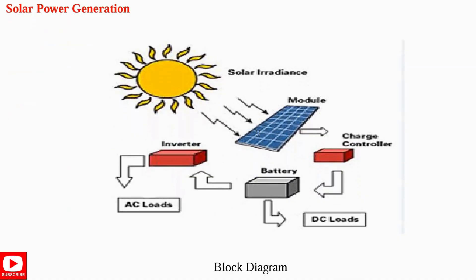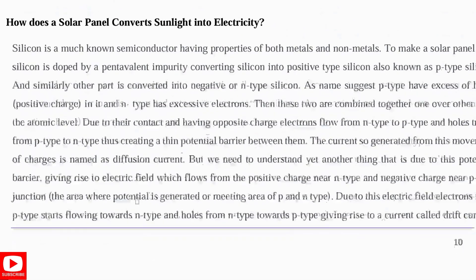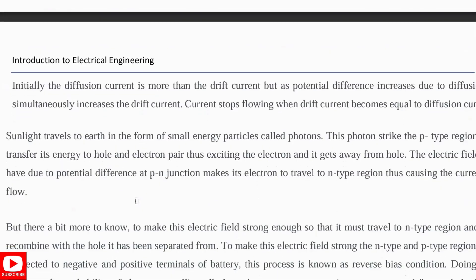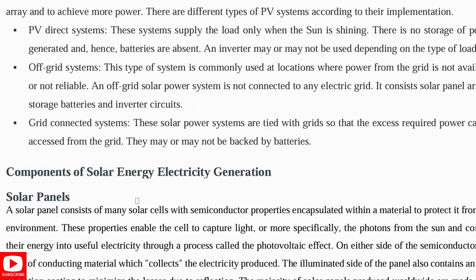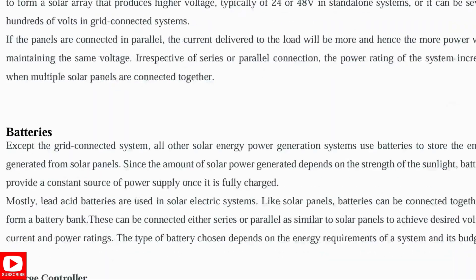Next is the solar energy block diagram: solar radiation falls on the module, goes to the charge controller, we have a battery and an inverter, and then AC loads. Explain the solar cells — what they are made of, how photovoltaic cells work, and how they convert sunlight into electricity using a p-type and n-type semiconductor. Explain these clearly to get good marks. One question from this topic is sure to appear in your exam.